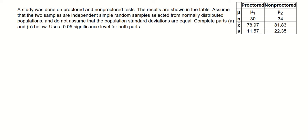This is a problem from our homework. A study has done on proctored and non-proctored test. The results are shown in the table. Assume that the two samples are independent, simple random samples selected from normally distributed populations and do not assume that the population standard deviations are equal. Complete part A and part B. Use your significant level as 0.05 for both parts. Part A of this problem is to construct a hypothesis test.